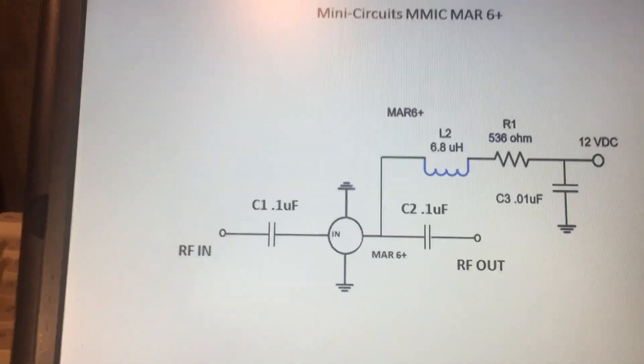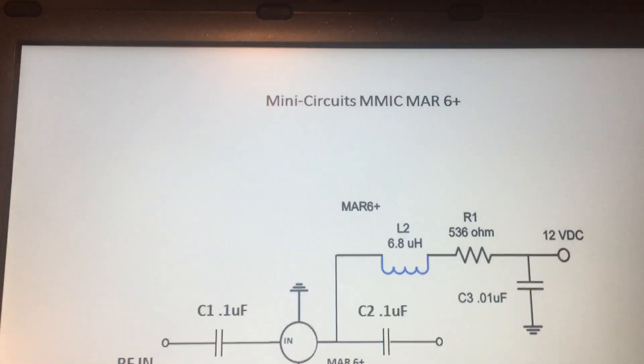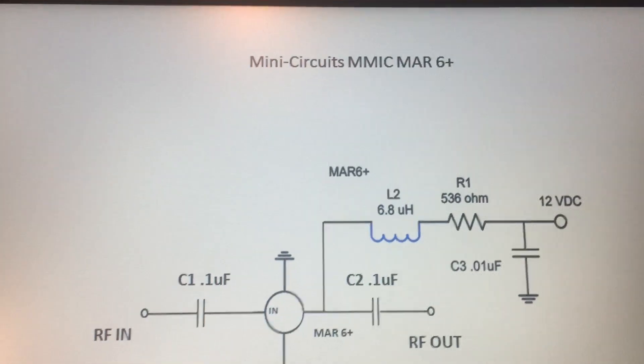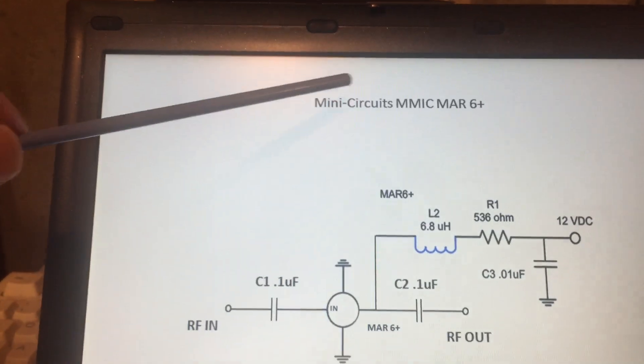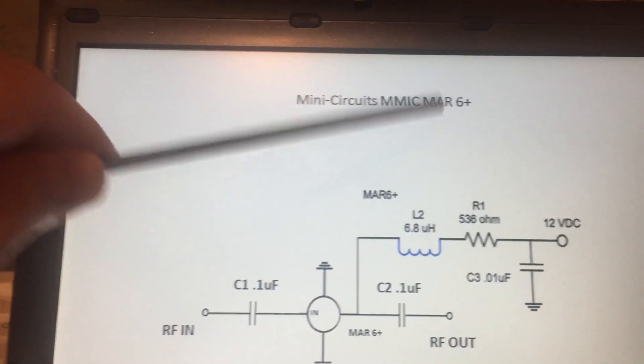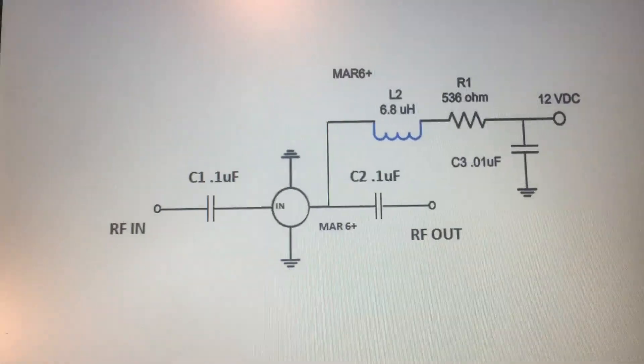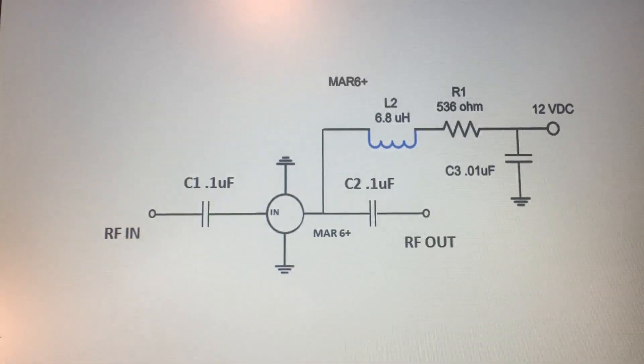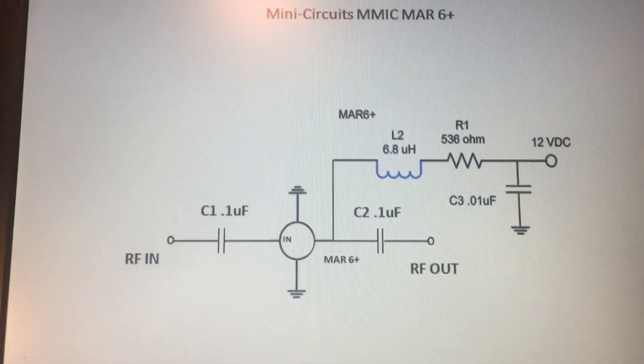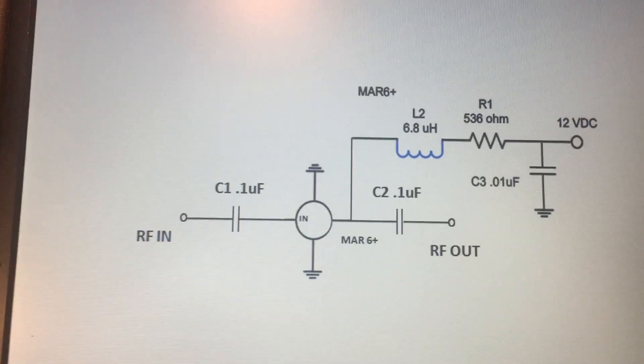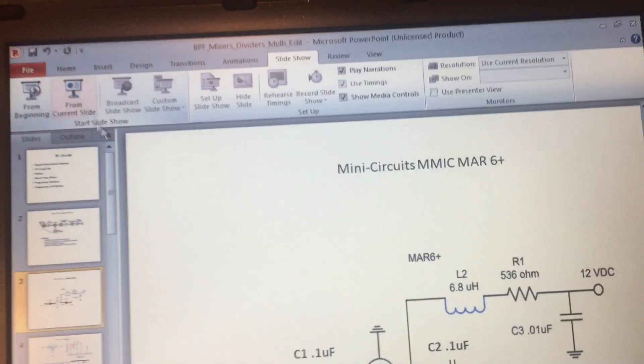The first topic is the RF amplifier. This is a small signal amplifier, very sensitive amplifier used on the front end of a receiver. This is the circuit that we're going to be discussing. It uses a mini circuits MMIC, an MAR6 plus. MMIC is basically a monolithic microwave integrated circuit. These are quite small devices which you'll see when I show you the circuit that I built.